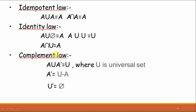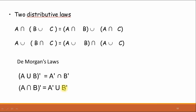Now, the complement law. In the complement law, A union A complement is equal to U, where U is the universal set, and A complement can be written as universal set minus A. A intersection A complement gives the empty set. Now, distributive law: the distributive law of intersection over union for three sets A, B, and C can be written as A intersection (B union C) is equal to (A intersection B) union (A intersection C).